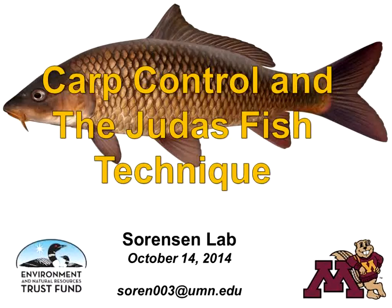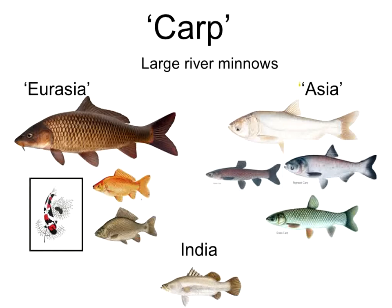Today I'm going to talk about carp. I worked with sea lamprey for 16 years and then since 2006 I've been working with carps, in particular goldfish. What are carp? They're basically large riverine minnows — not really a scientific grouping, but a group of fish that happen to live in rivers. There are three major types: Eurasian carps from the Black Sea and Caspian Sea area, which includes goldfish and common carp; Asian carp from China and Vietnam, which are now invading the U.S.; and Indian carps, which haven't made it to the U.S. yet.